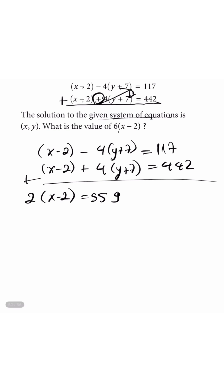So it's asking me the value of 6 times x minus 2. What I can do here is either I'm going to isolate the x minus 2 in here, and I will just divide both sides by 2. And I'll be like, okay, so x is 559 divided by 2 plus 2.